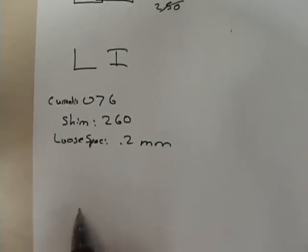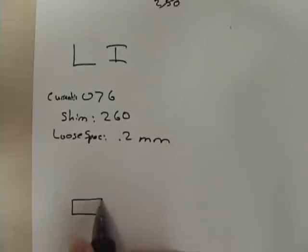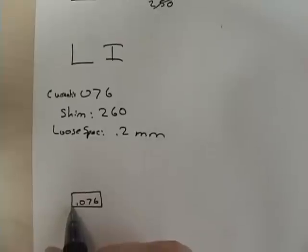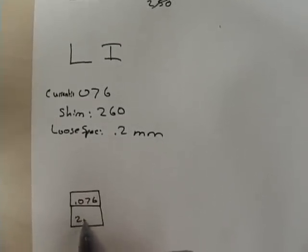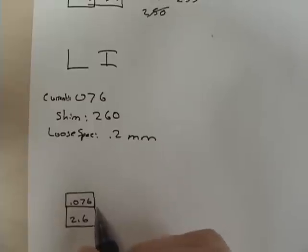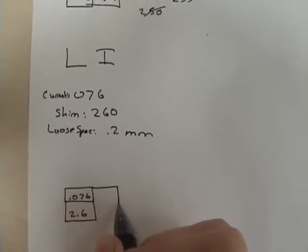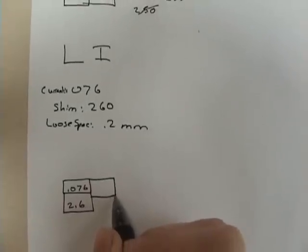Same thing for the next one. Got your clearance of .076 and the current shim of 2.6. Well, make your other clearance, it's going to be bigger. I guess this is a better representation.